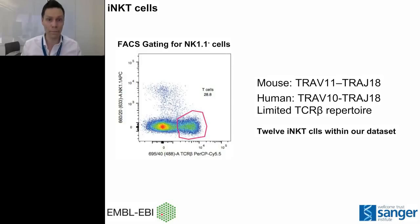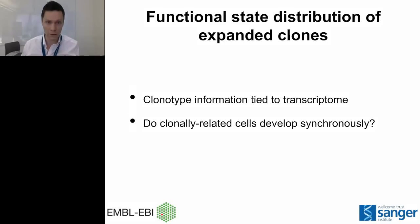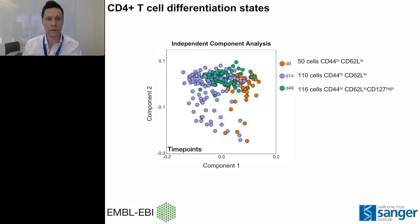We could see evidence of infection-induced clonotype expansion even in these relatively small cell populations, detecting as many as 10 expanded clones from one mouse with 66 cells. Once we identified these clones, we wanted to find out whether there was any correlation between clonality and the functional state of the cell — whether clonally related cells behaved the same way during infection. With Tracer, we had both sequence information and the full transcriptome, making this a fairly easy comparison. We have cells from three time points: red for healthy control, blue for day 14 peak infection, and green for week 7 memory. We performed independent component analysis, which reduces dimensionality while retaining useful biological information — similar to principal component analysis — and found the cells segregate quite clearly by time point, with some overlap between day 14 and day 49 memory cells.